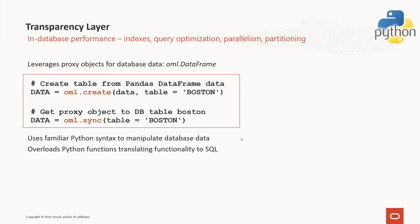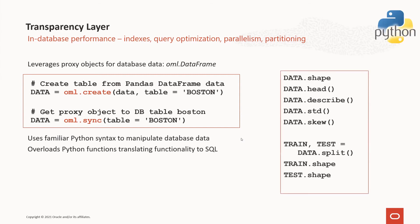The OML4Py transparency layer provides the foundation for leveraging in-database performance. Using proxy objects and overloaded functions, users can take advantage of database column indexes, query optimization, parallelism, and table-level partitioning, which can greatly improve performance on database table operations. Here we see how we can create a table from a pandas DataFrame using OML.create, specifying the table name we wish to use — in this case, Boston. If the table already exists in the database, we can use the function OML.sync and specify the table name we wish to retrieve. This returns a proxy object that we can then use to invoke familiar pandas functions like shape, head, and describe, and even take advantage of Python syntax for splitting data into train and test sets. These overloaded functions translate desired functionality to SQL for in-database processing.